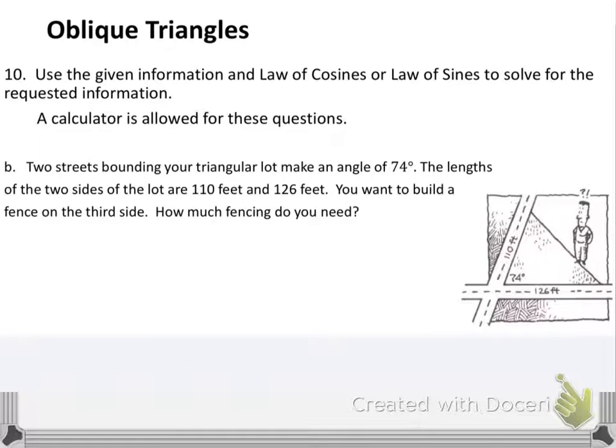Now let's look at another example, example B. Two streets bounding a triangle, and this is nice because they already give us the triangle, make a 74 degree angle, and the lengths of the streets are 110 and 126. I can see from this picture that I have a side, an included angle, and then a side again. So this is a side angle side problem. That's going to use the law of cosines.